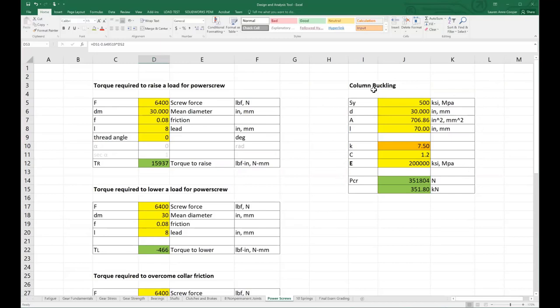You're going to have to add this section for your homework for column buckling, because when you do the C clamp analysis, you'll also do a column buckling analysis on that lead screw. Okay, that's it. Thanks for watching.